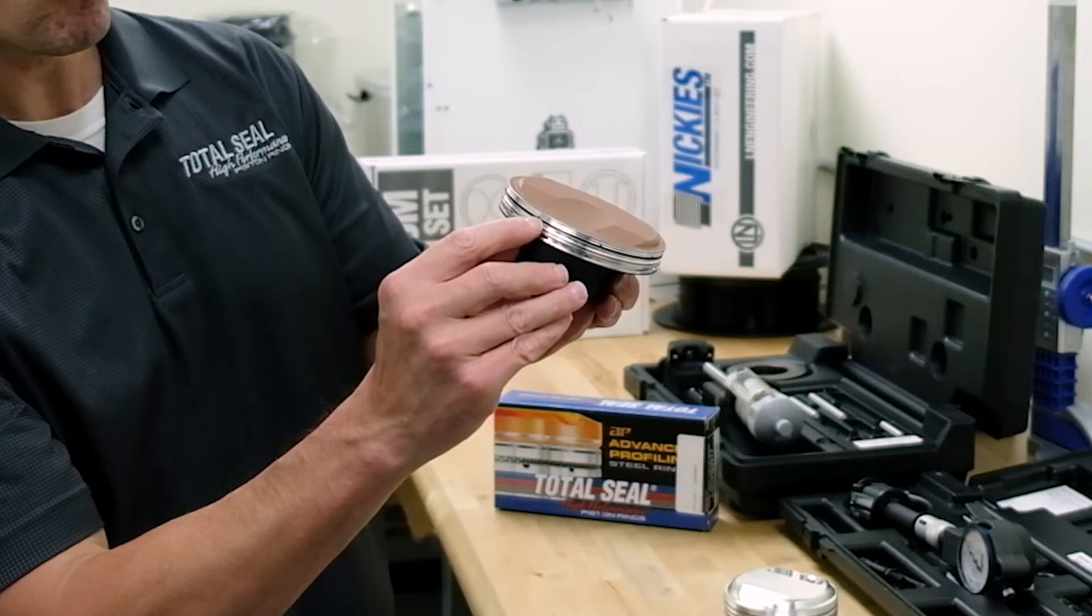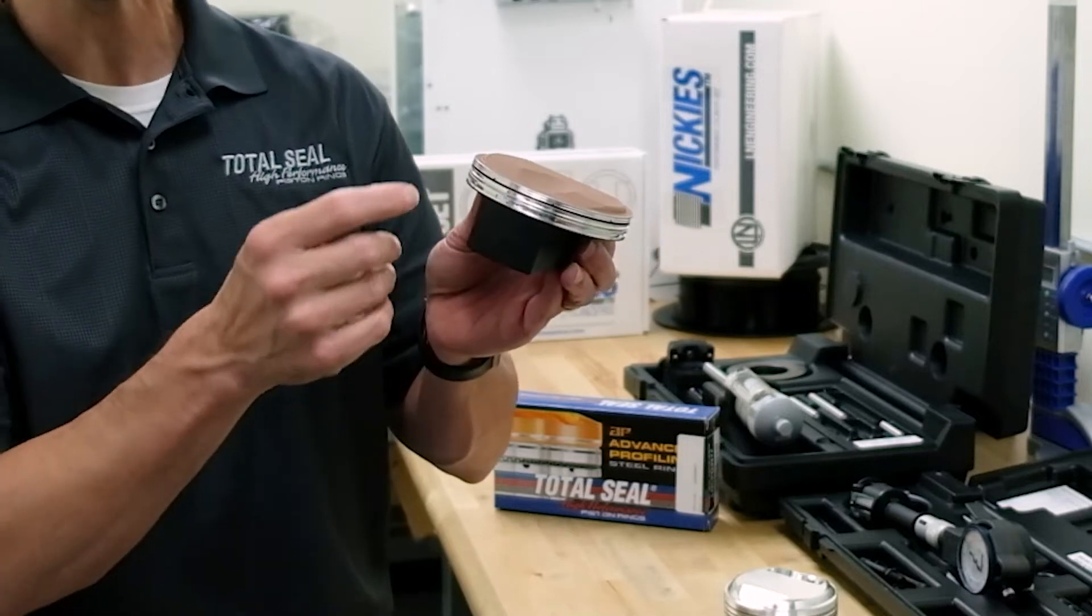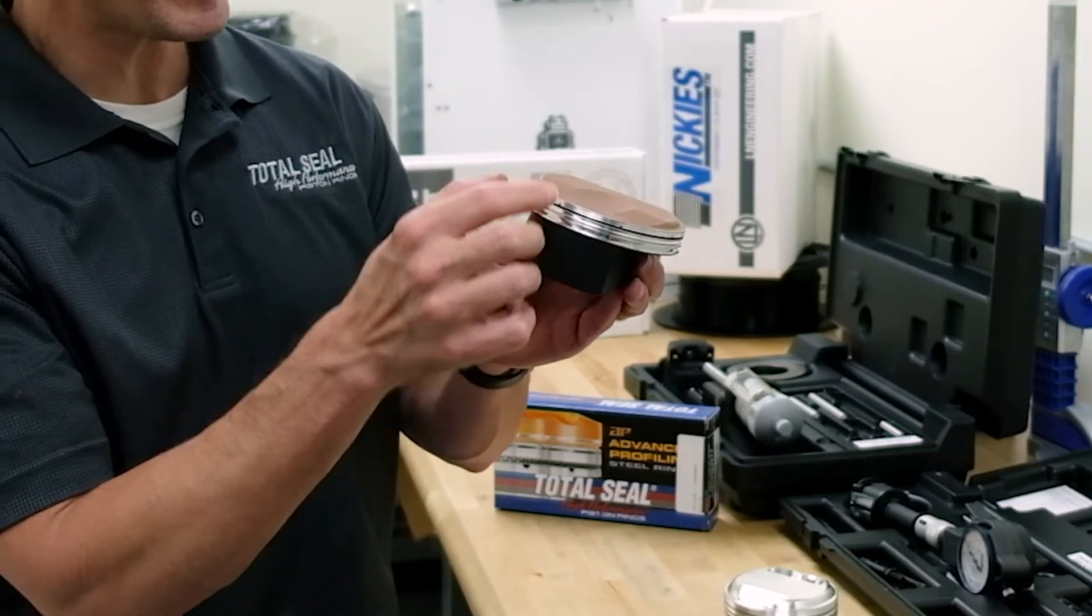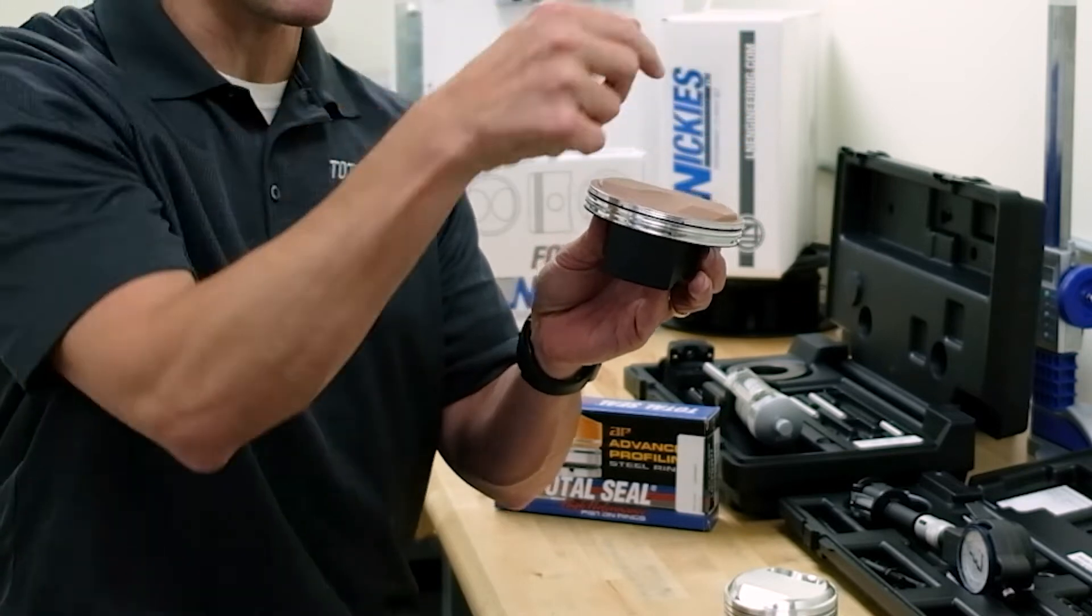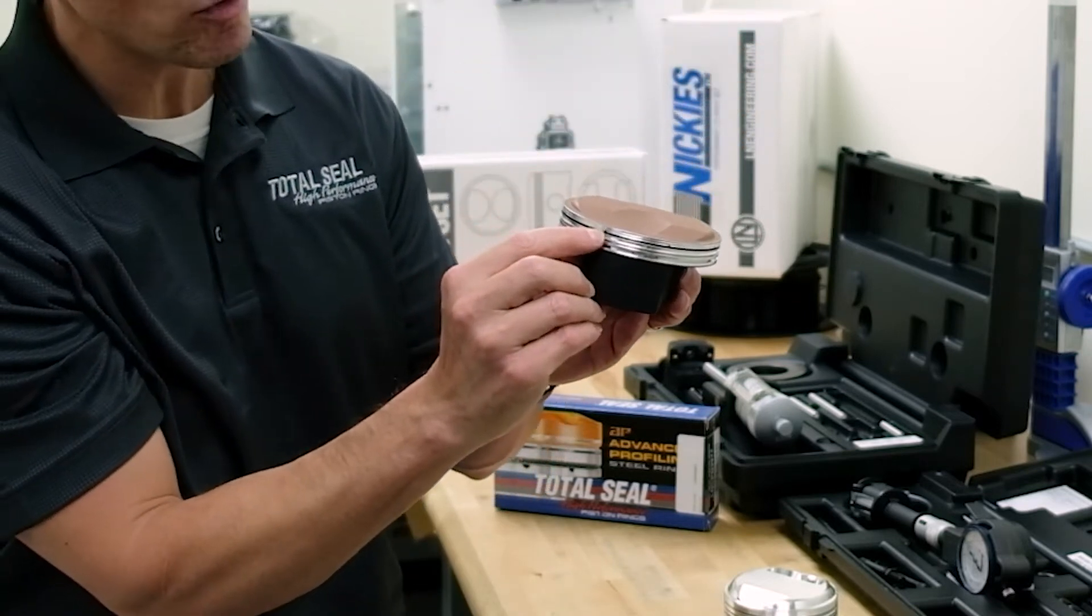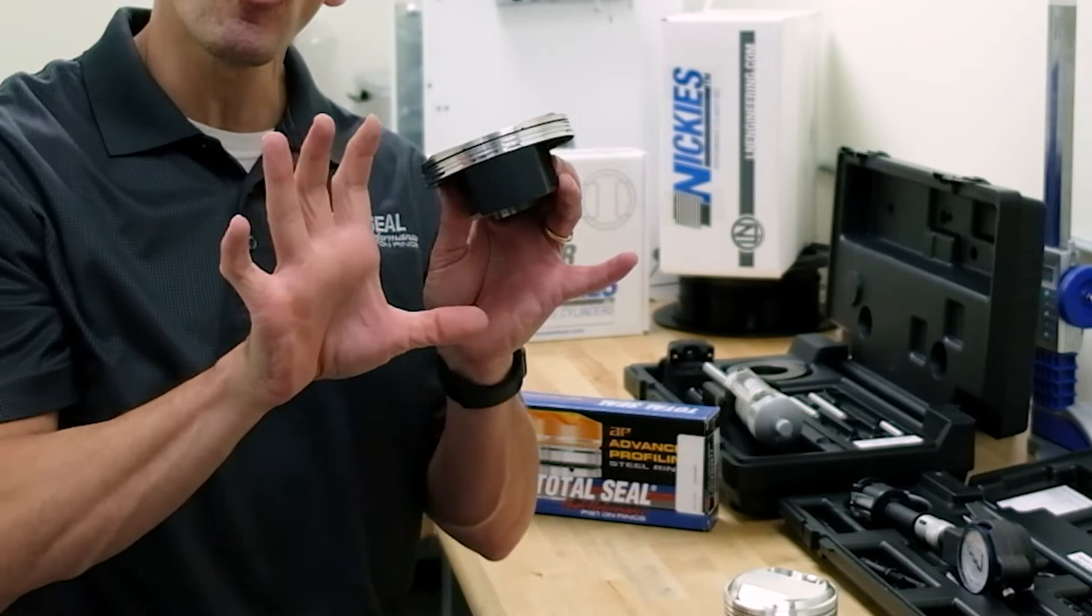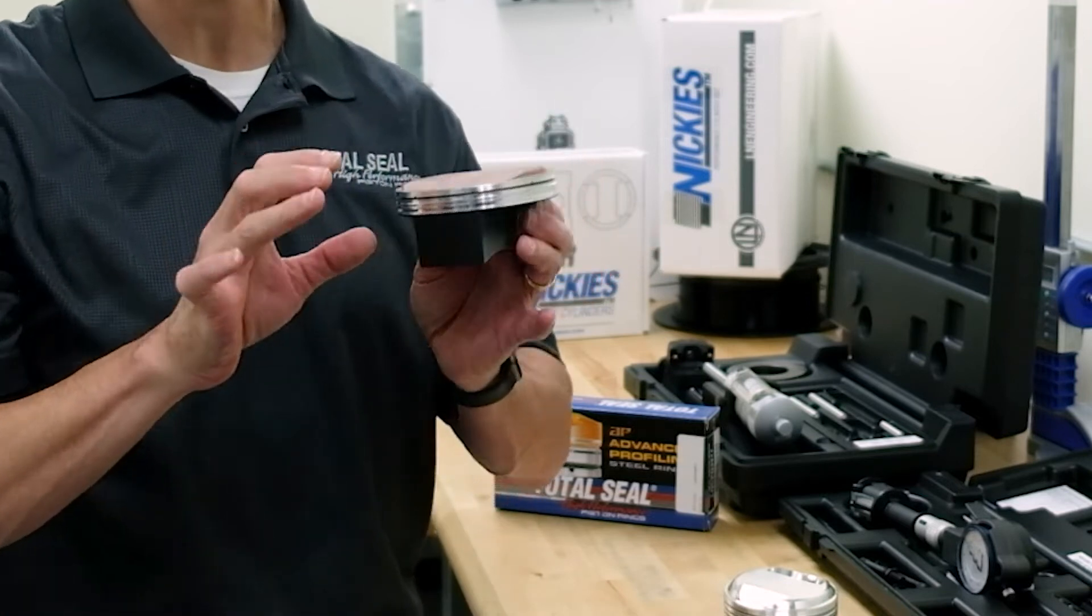Those little holes right there are essentially slots that allow the gas pressure, the combustion pressure up here, to get behind the ring to help force the ring out against the cylinder wall.